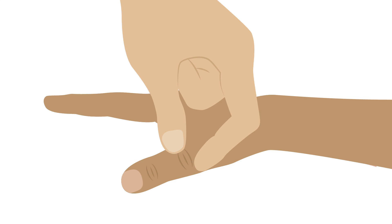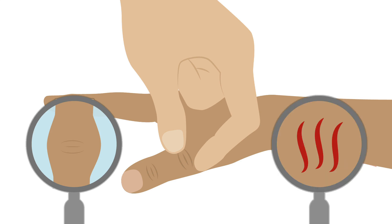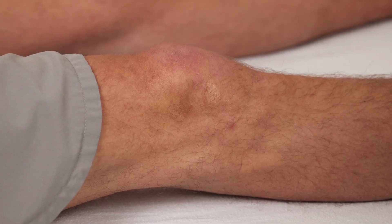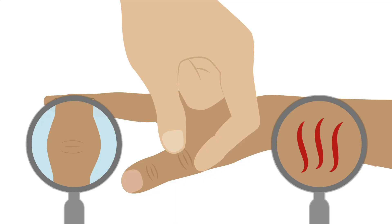When palpating a joint, you also want to assess for swelling and increased warmth. If you notice any bogginess, excess soft tissue, warmth, or have difficulty feeling the joint lines, then most likely that joint is inflamed or swollen. Sometimes it is difficult to assess joint swelling in patients with higher body weight or those with allodynia, where a patient feels pain from a non-painful stimulus. Comparing the joint with the contralateral side can be very helpful.